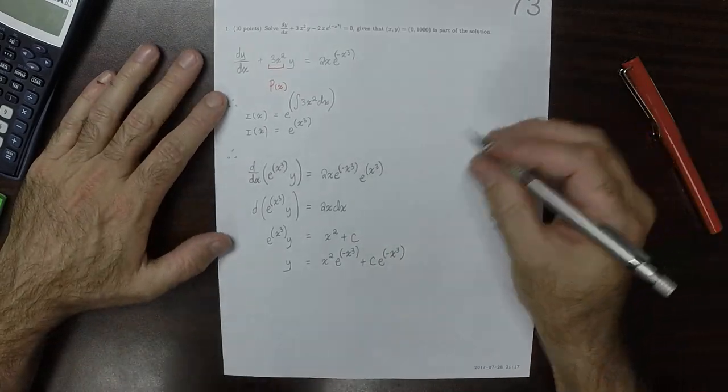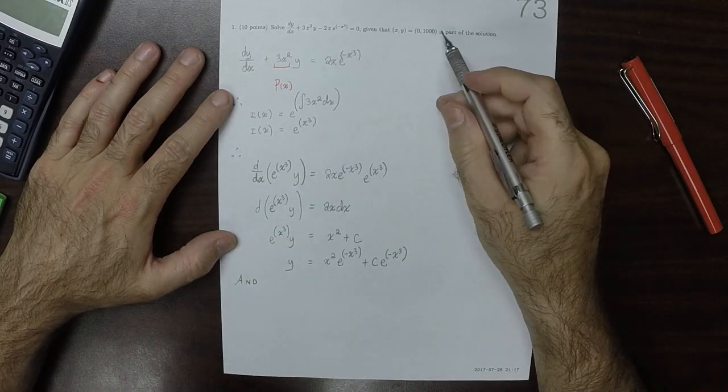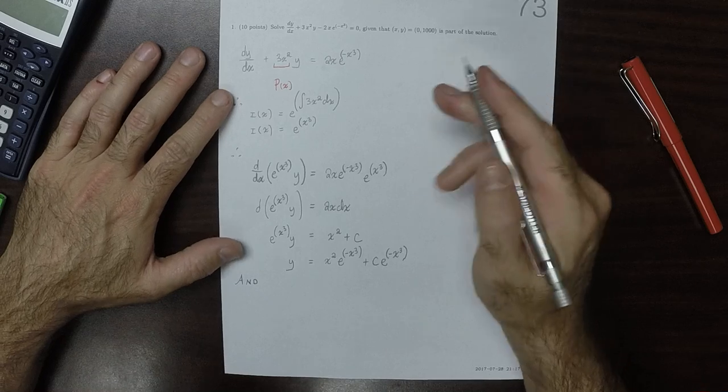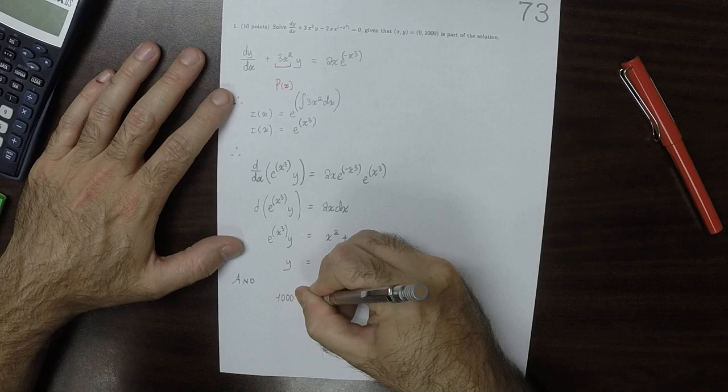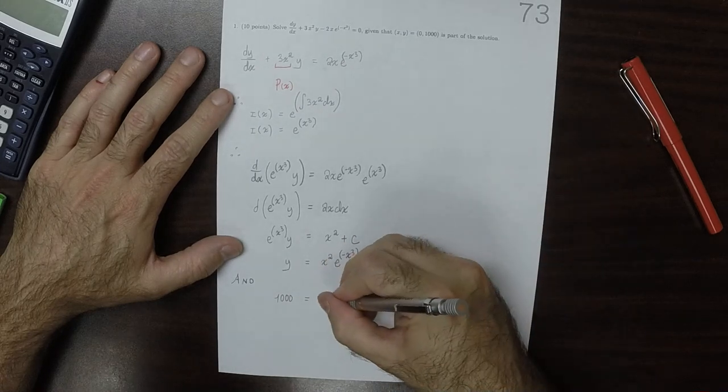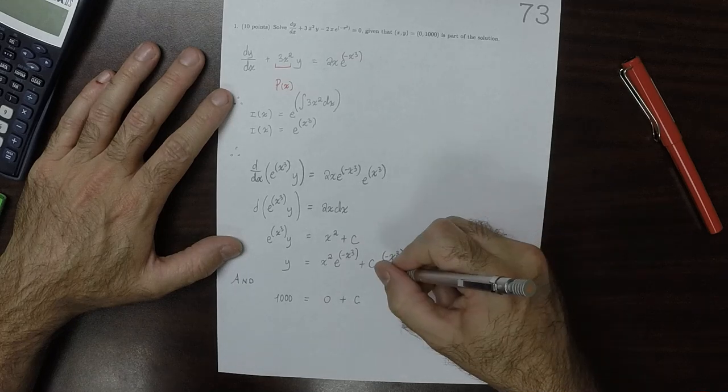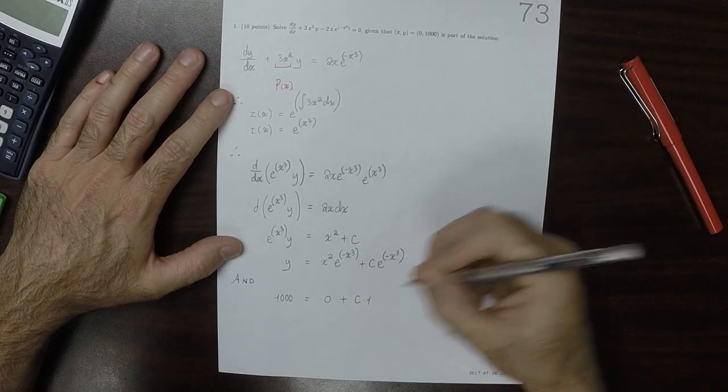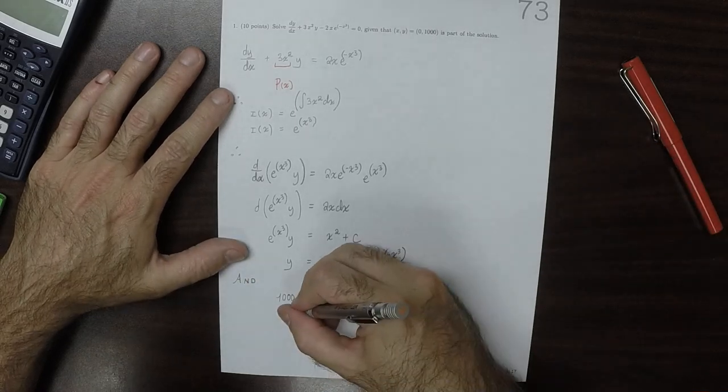So when you plug in x is zero, you should get y is one thousand. So one thousand equals zero plus C times one. Okay, so C is one thousand.